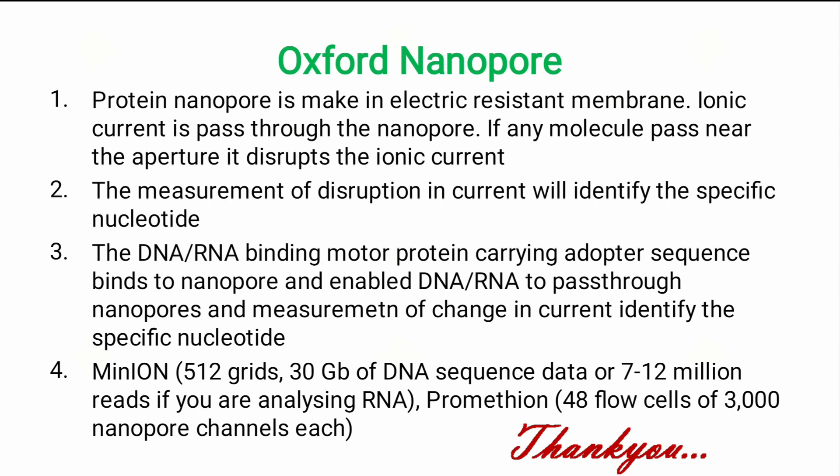Oxford Nanopore developed a third generation sequencing method where a protein nanopore is embedded in an electrically resistant membrane. An ionic current is passed through the nanopore, and if any molecule passes near the aperture, it disrupts the ionic current. Measurement of the disruption in current identifies the specific nucleotide. A DNA or RNA binding motor protein carrying an adapter sequence binds to the nanopore and enables DNA or RNA to pass through, measuring the change in current to identify each specific nucleotide.